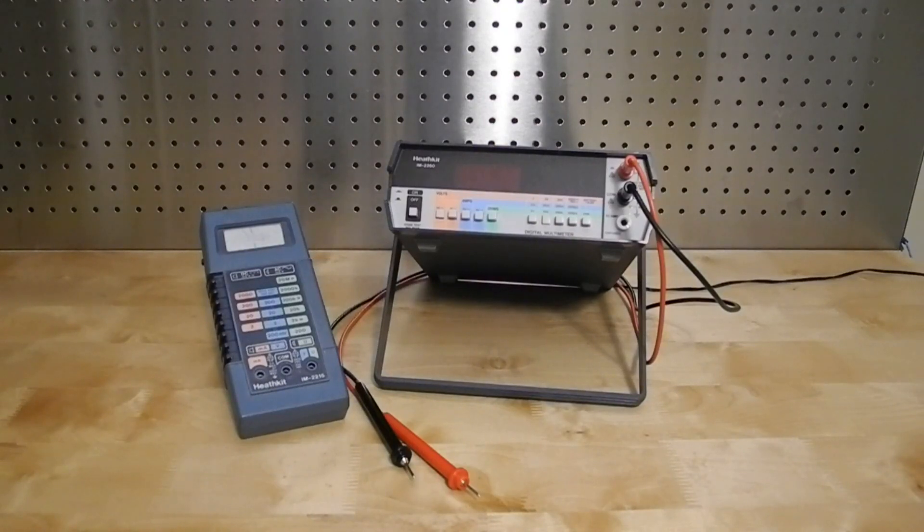The IM2260 Digital Multimeter was one of three new DMMs released by Heathkit in 1982. Selling for $129.95 when introduced, it was the lowest-priced model of the three.